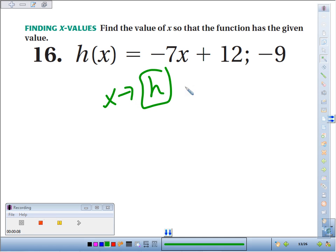x goes in, out comes whatever x was, times negative 7, and add 12 to it.